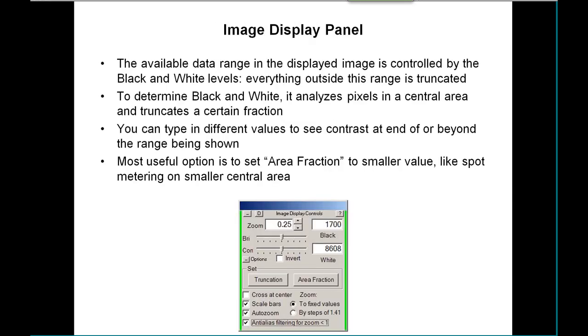Moving down the panels, if you look at the image display control panel, every time you take a new image, you'll see new numbers show up in these black and white boxes. This is the range of data values that are being displayed on the screen as 0 to 255. Everything below the black level and above the white level are truncated at black and white.